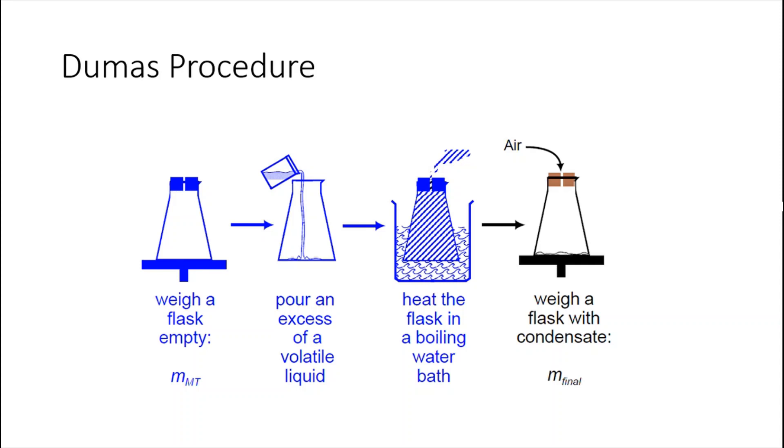This is a sketch of the procedure. You will have a video that you'll see where they describe it in more detail. But essentially, you will start by weighing an empty flask with its covering, whatever that is going to be. We are going to add an excess of a volatile liquid. By excess, we mean more substance in liquid than will take to fill up the whole flask once it vaporizes.